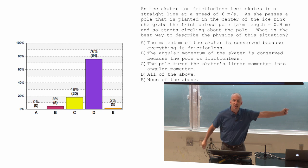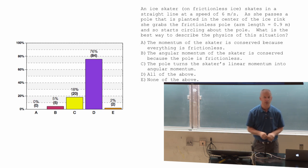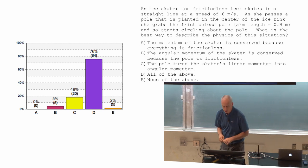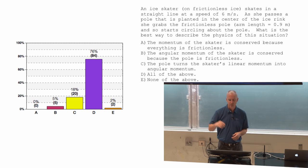Momentum is certainly not constant. She reaches out, grabs the pole. In other words, the pole is suddenly pulling on her toward the center of her circle and changing her momentum all the time as she goes around in a circle. So momentum isn't conserved, of course nobody picked that.